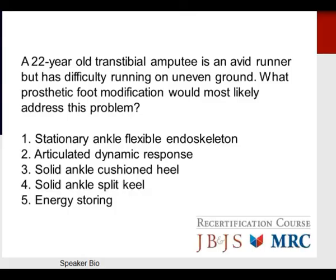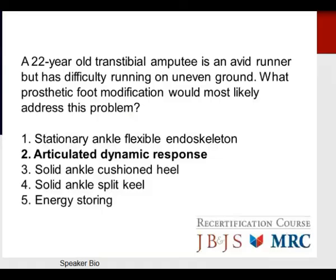Question: A 22-year-old trans-tibial amputee is an avid runner but has difficulty running on uneven ground. What prosthetic foot modification would address this? Options: stationary ankle flexible endoskeleton (SAFE), articulated dynamic response prosthesis, solid ankle cushioned heel (SACH foot), solid ankle split keel, or energy-storing prosthesis. For a young, active trans-tibial amputee running on uneven ground, the appropriate response is an articulated dynamic response prosthesis. Its articulated nature allows management of uneven surfaces while its dynamic response benefits running.